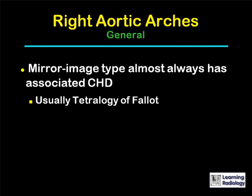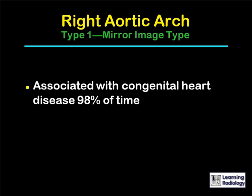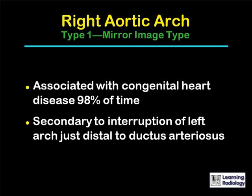In general, the mirror image type of right aortic arch is almost always associated with congenital heart disease, usually tetralogy of Fallot. The right aortic arch with an aberrant left subclavian artery is rarely associated with congenital heart disease, and it is also the most common variety of right aortic arch. The Type 1 or mirror image type is associated with congenital heart disease 98% of the time. Its embryological origin is secondary to interruption of the left arch just distal to the ductus arteriosus.